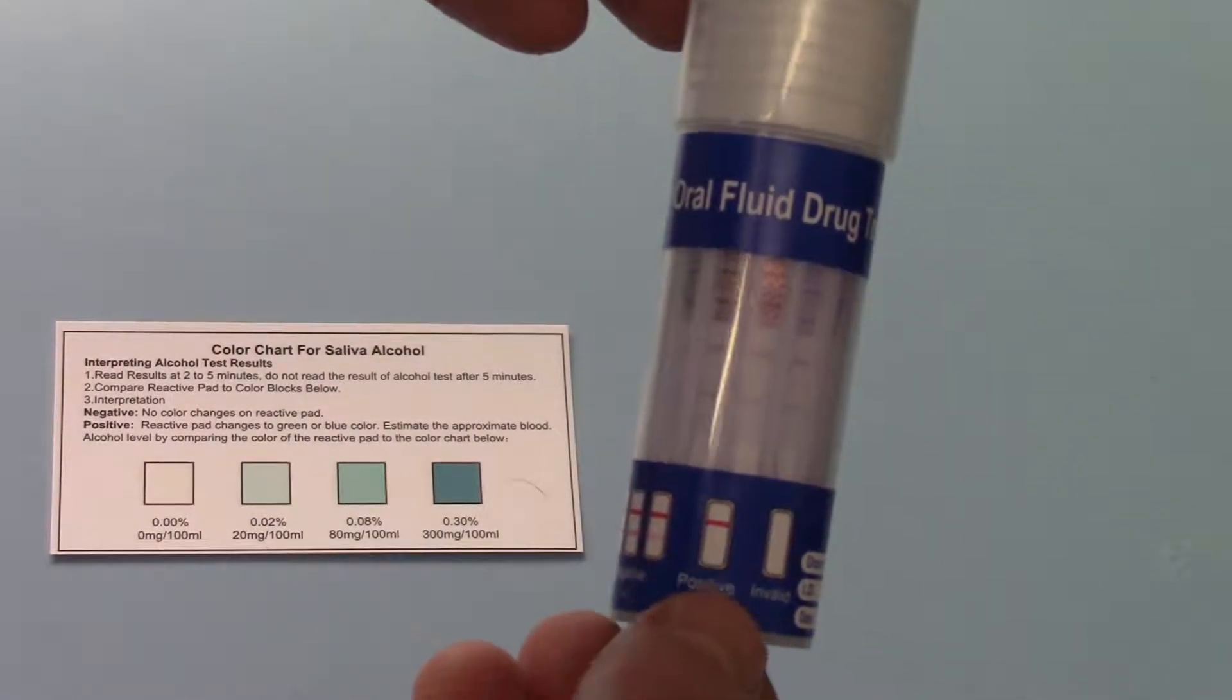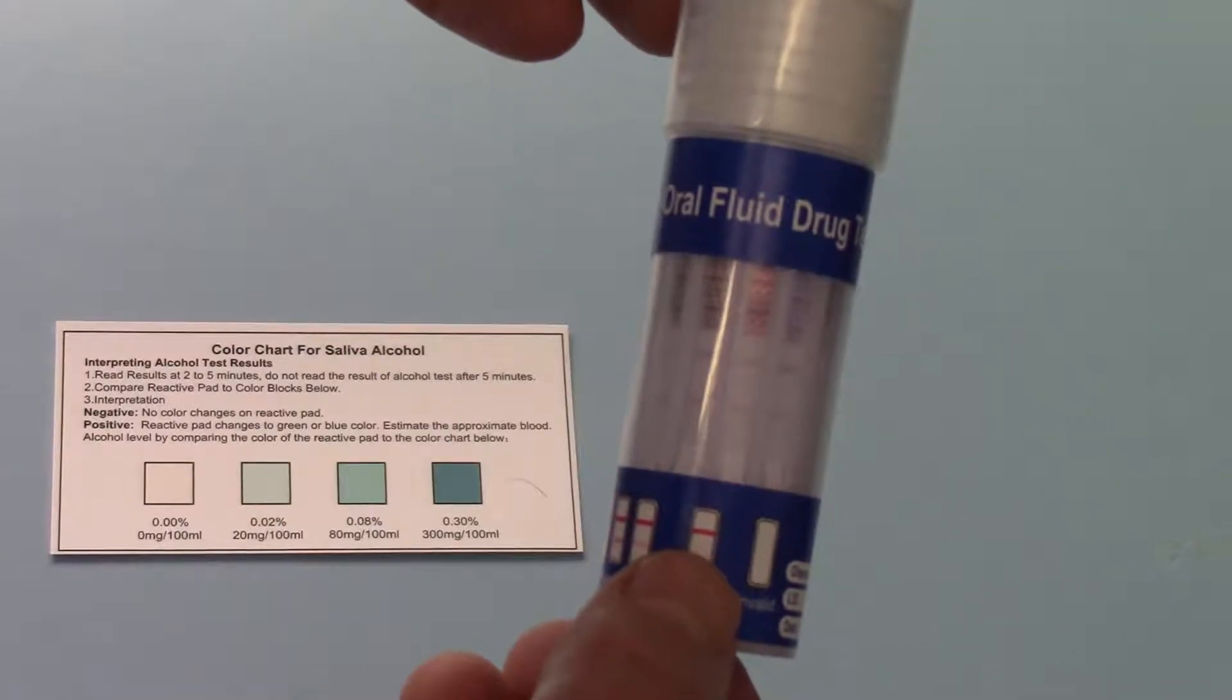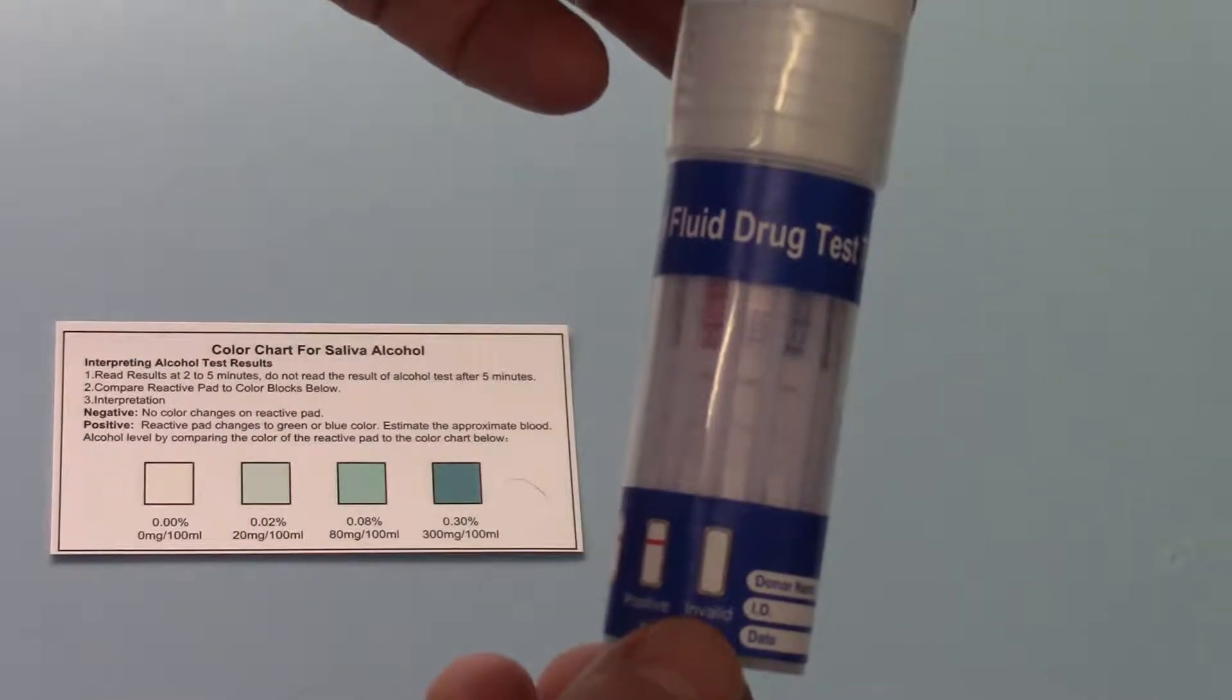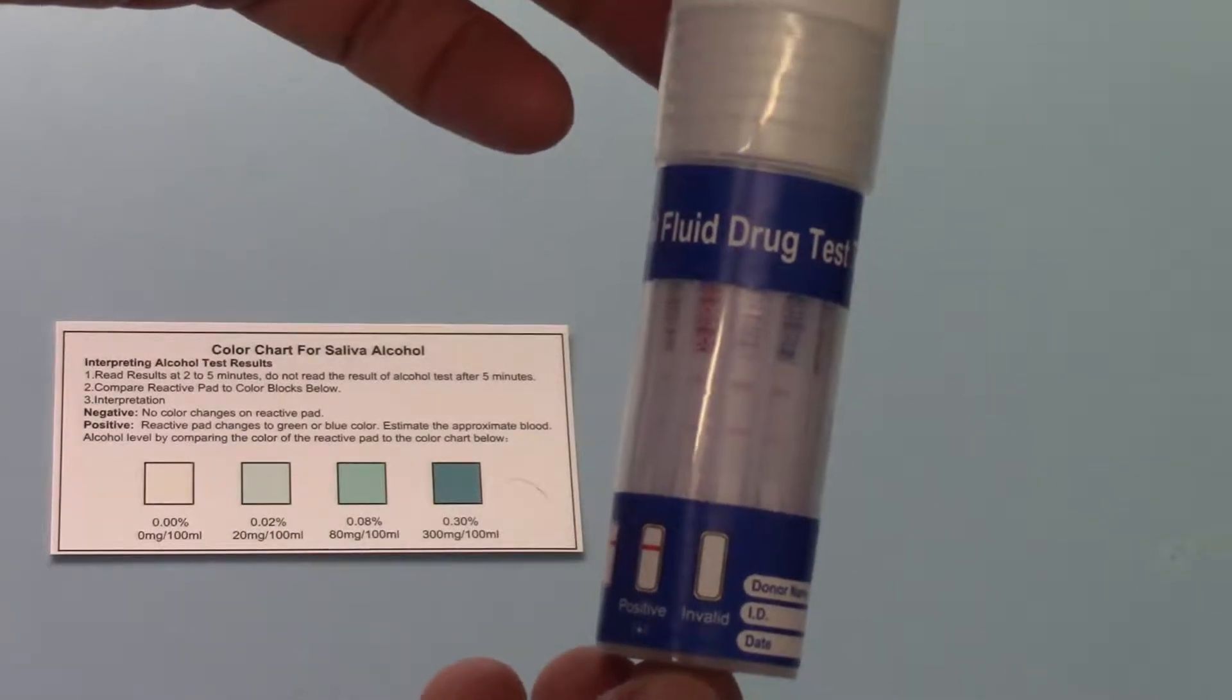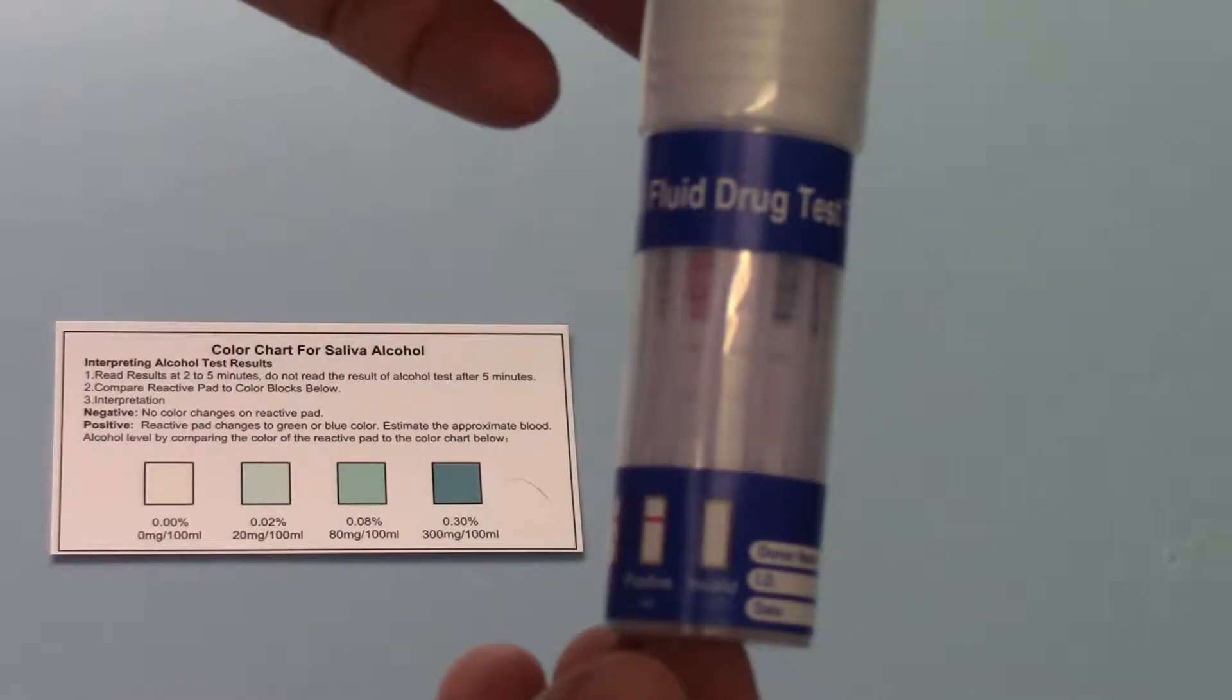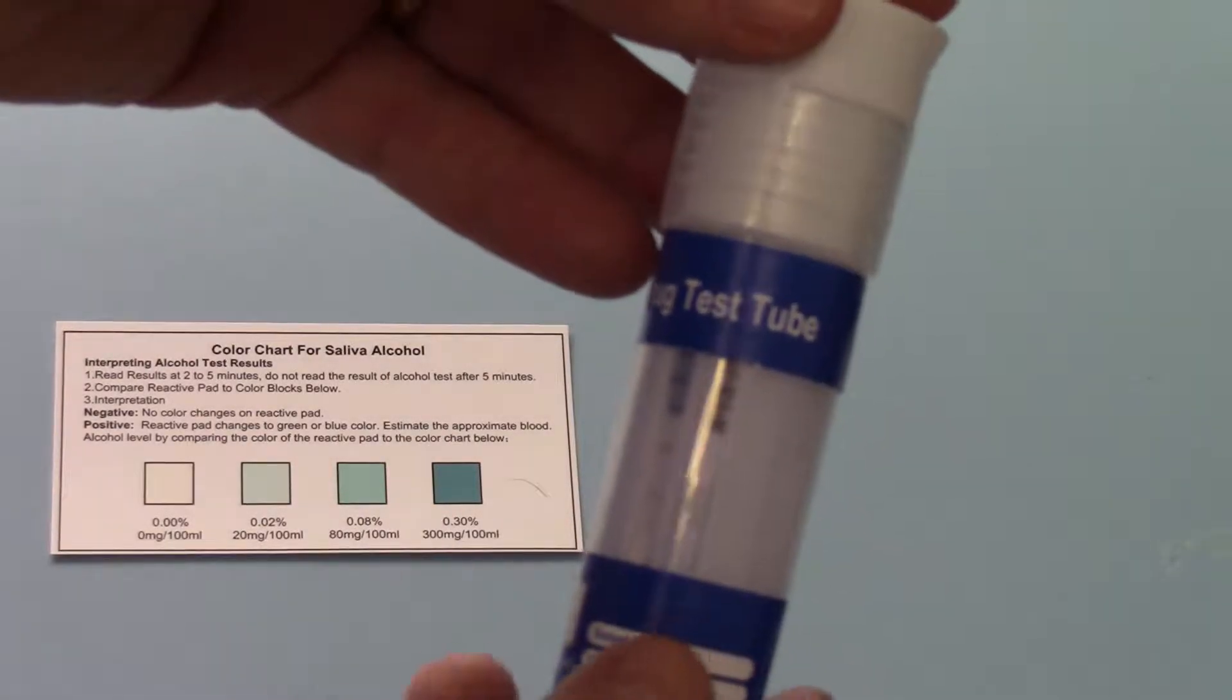It also gives you an indication of a positive drug test result where there is only a control line showing and no test line. An invalid test is where there's no control or test line, that would tend to indicate insufficient saliva has been added to wet that membrane and run it properly. And then on the very end you've got the alcohol pad.